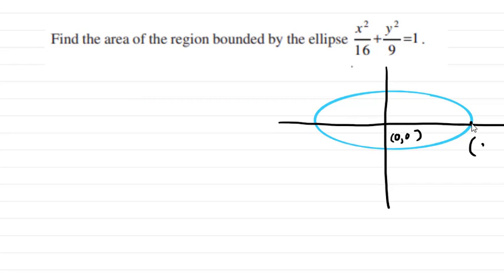This is the major axis, so this point will be (4,0). This equation can be written as x²/4² + y²/3² = 1. So this point will be (4,0).